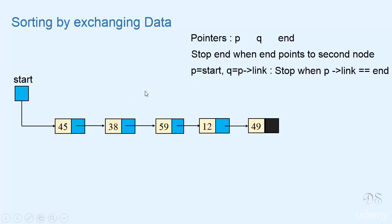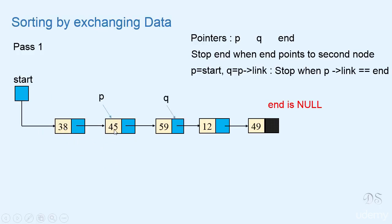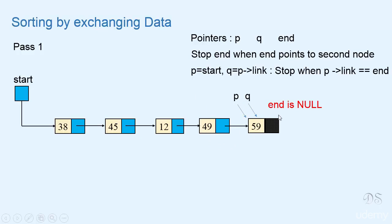Let's start. In pass one, end will be null. We'll initialize p with start and q with p-link. Now we'll compare the info parts of these two nodes. This is bigger so we'll swap them and move p and q forward. Now there's no need of swapping. We'll move p and q forward. Now we need to swap since 59 is bigger than 12. So we'll swap and move p and q forward. Again we need to swap. We'll move p forward. Now p-link has become equal to end — end is null and p-link is null — so we'll stop. This is the end of pass one.